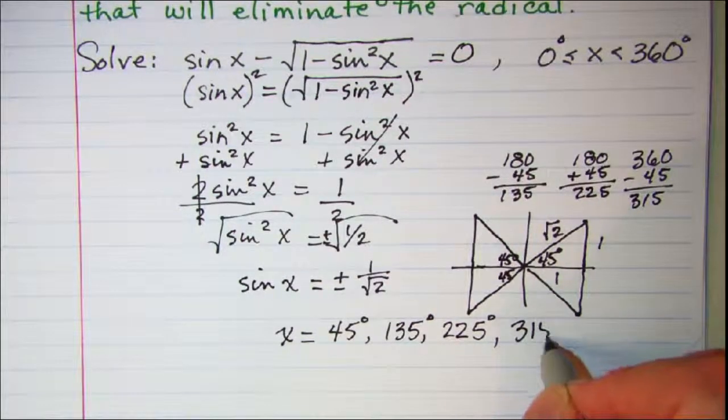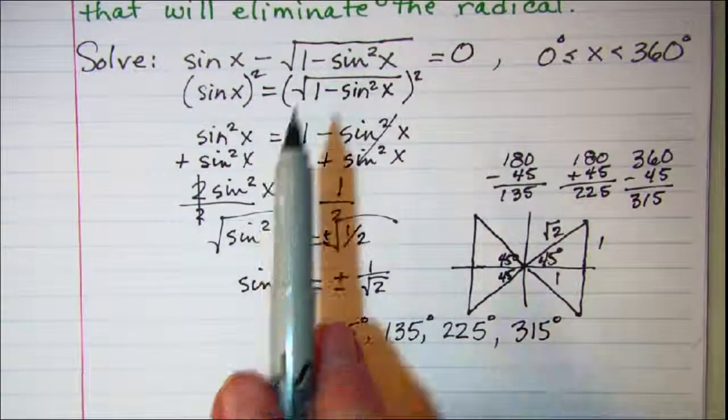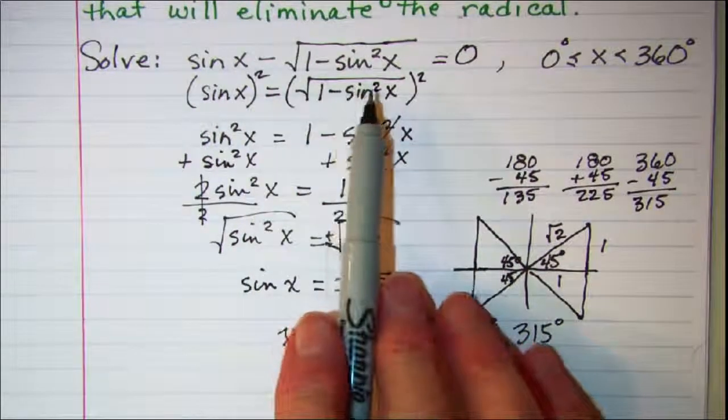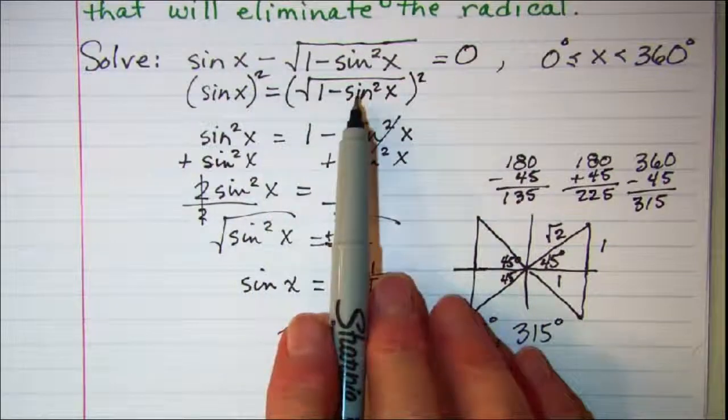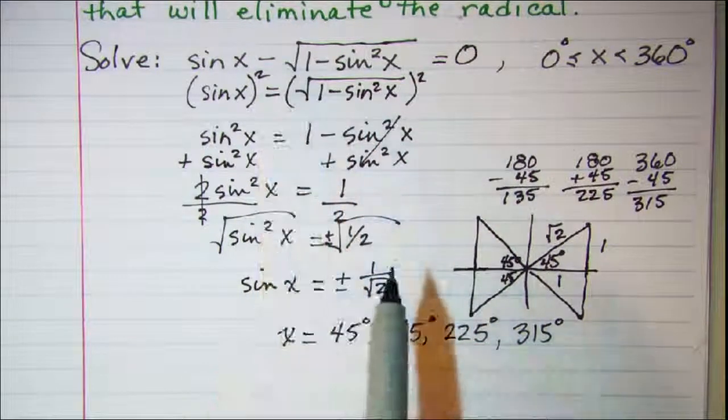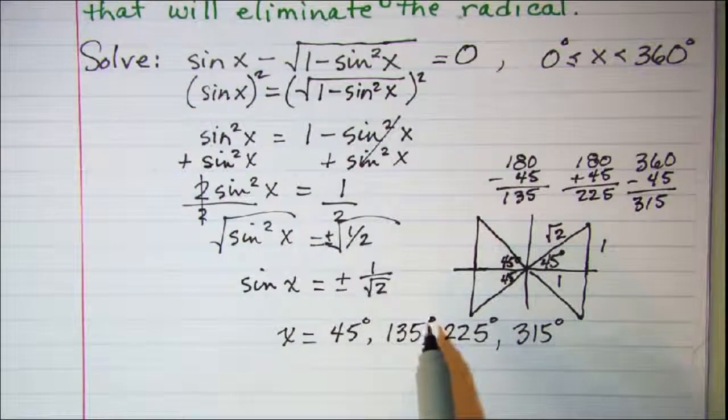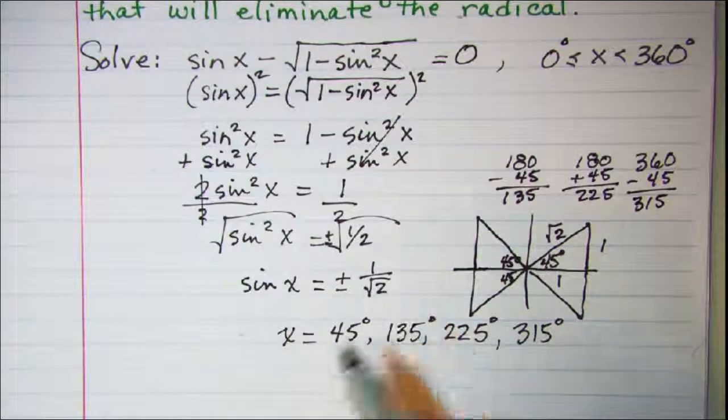The problem with this type of equation is that whenever you square or raise both sides to any power, there's the possibility of generating extra solutions. So you always check.